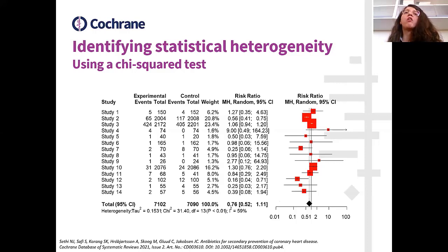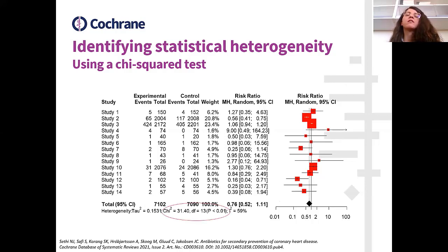Here is forest plot C from our earlier poll. We have 14 studies and performed a meta-analysis using a random effects model. The chi-square test equals 41.4, with a corresponding p-value lower than 0.01, which is lower than 0.10. This gives us evidence of statistically significant between-studies heterogeneity.